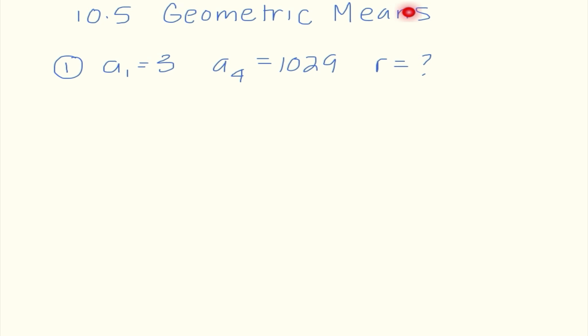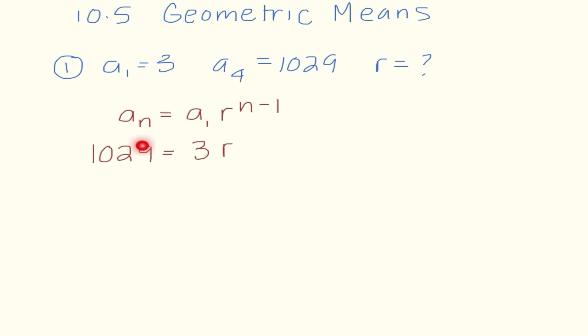So if we look at number one, I know that this is geometric because of this r value, so it's saying that we need to find what r is. The only geometric formula we know is our nth term formula: a sub n equals a sub 1 times r to the n minus 1 power. The term they give us is 1029, our first term is 3, r is unknown, and 1029 is the fourth term. So I'm going to put 4 minus 1 as my exponent.